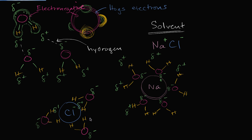So you can see something interesting here: if something has charge — if it's an ion — or if something has some polarity, it's very easy to dissolve it inside of water. In this case, water is the solvent, and the thing being dissolved in the water is called the solute.